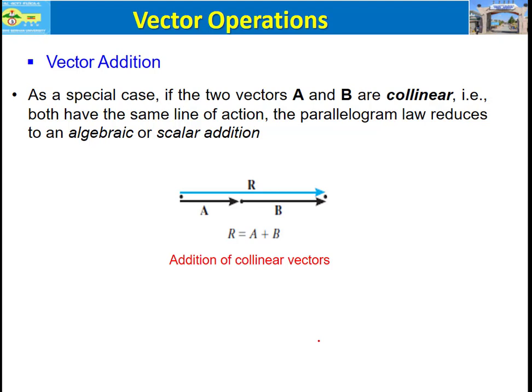Another special case of vector addition is when we have collinear vectors — meaning vector A and vector B have the same line of action. In this case there is no need to construct a parallelogram; we simply use algebraic or scalar addition. The resultant vector R equals A plus B.